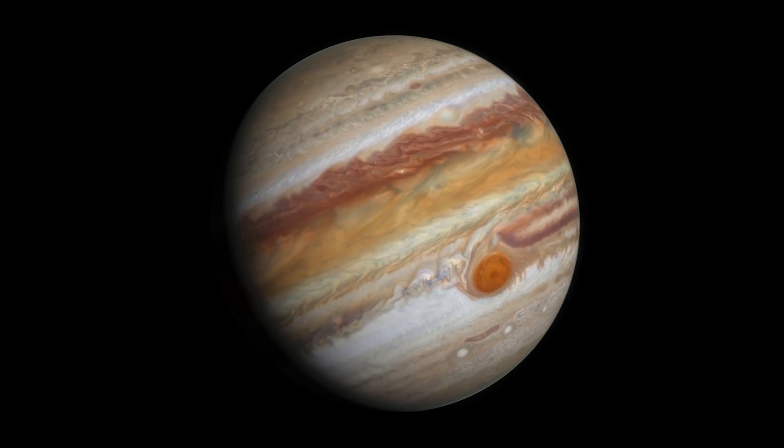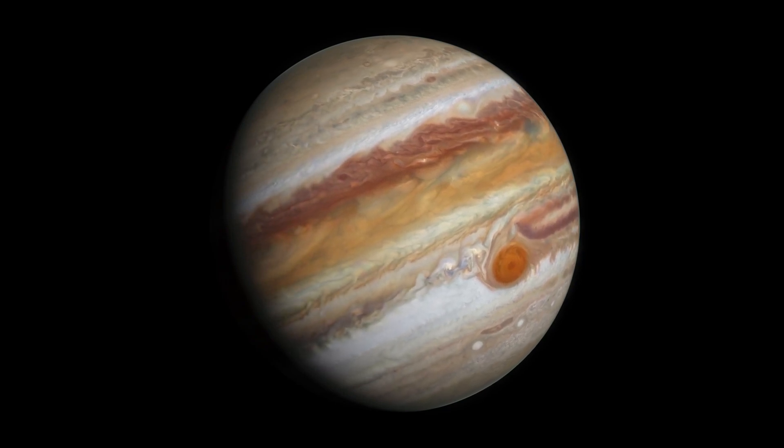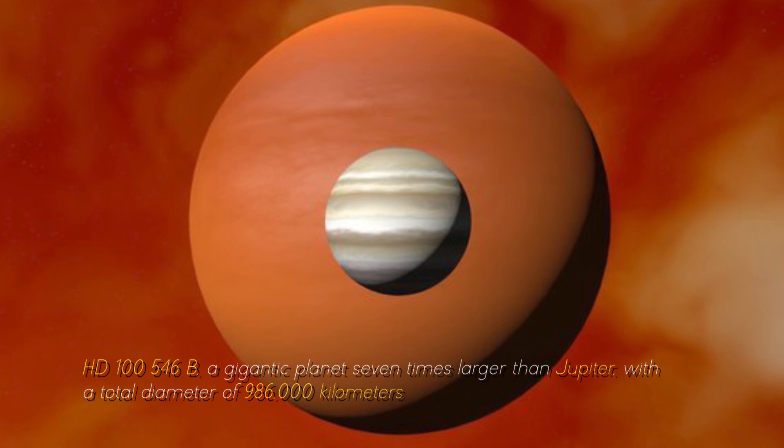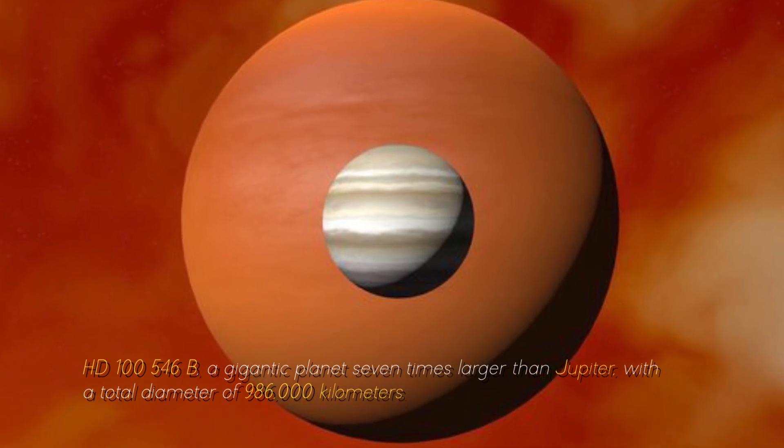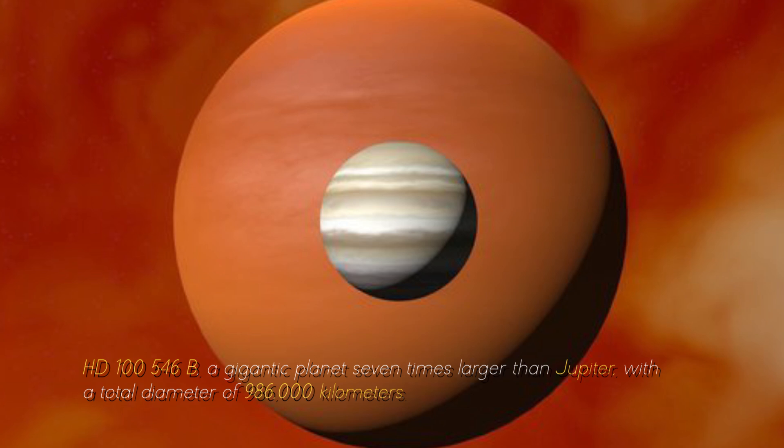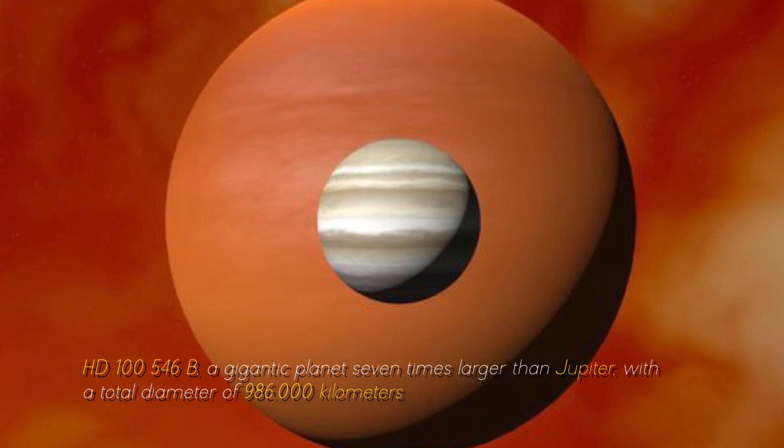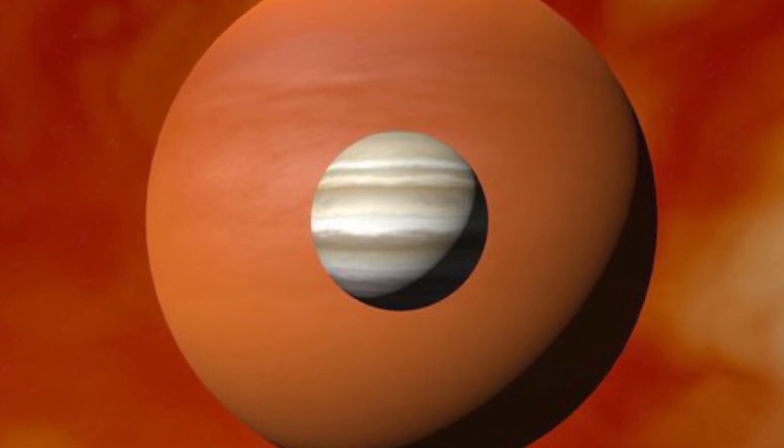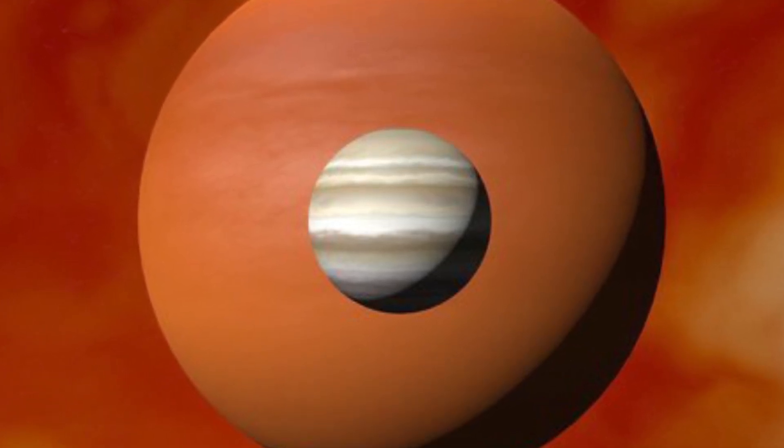Now, let's compare Jupiter with the largest planet in the known universe, HD-10546 b, a gigantic planet seven times larger than Jupiter, with a total diameter of 986,000 kilometers. You can imagine what Earth would look like near this cosmic monster, can't you?